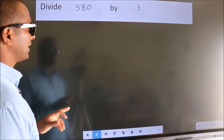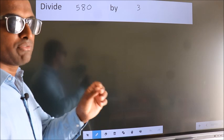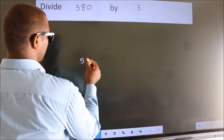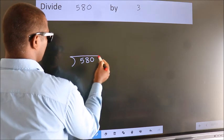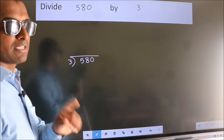Divide 580 by 3. To do this division, we should frame it in this way. 580 here, 3 here. This is your step 1.